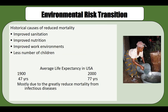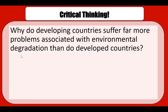Here we see an example of environmental risk transition in the U.S. In 1900, average life expectancy was only 47 years, and by the year 2000 it had almost doubled to 77 years. This happened mostly due to greatly reduced mortality from infectious diseases, and that happened because of improved sanitation, improved nutrition, improved work environment, as well as fewer children.